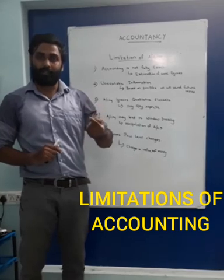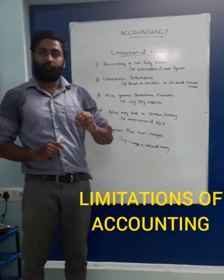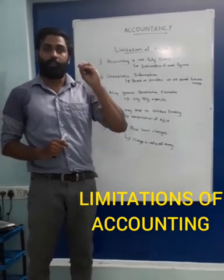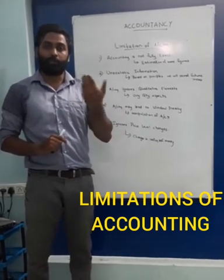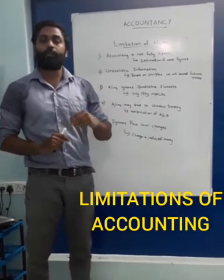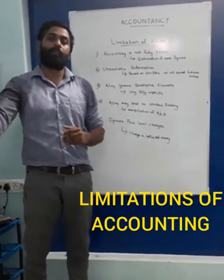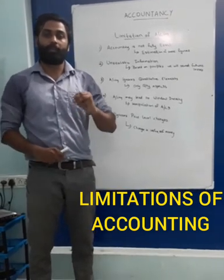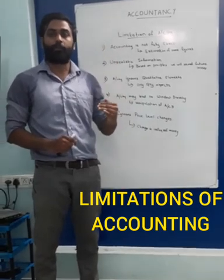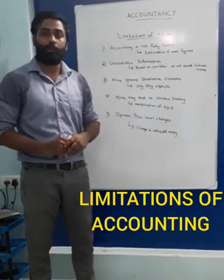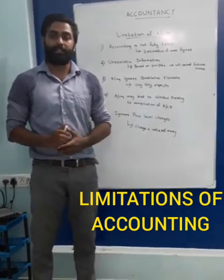For example, if a dispute occurs in court, accounting concepts say that if we assume a future loss could occur due to this dispute, we should record that loss in the current year itself — even though that loss will occur after 5 years. This will reduce the profit of the current year, and thus the account may show some unrealistic information.